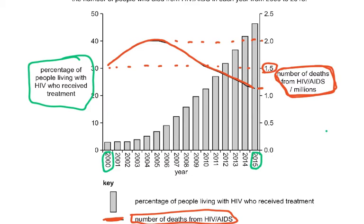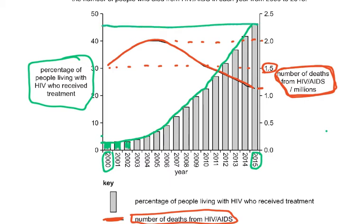At 2000, the percentage of people living with HIV receiving treatment is about 3 percent, then it remains near 3 percent and increases slowly. By 2015 it is approximately 45 to 46 percent. You must read off values from the correct y-axis — the percentage of people receiving treatment is on the left, and the number of deaths is on the right.